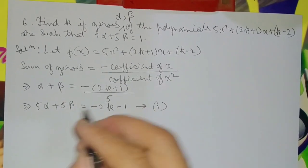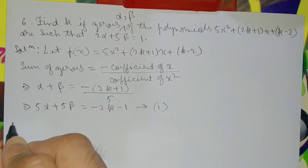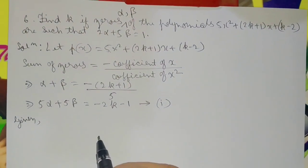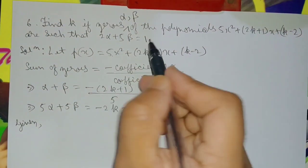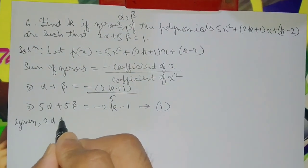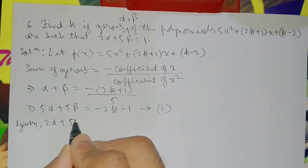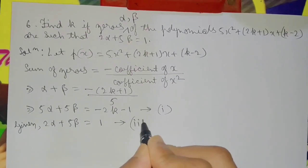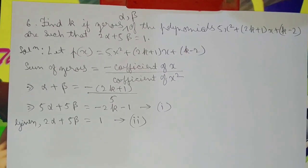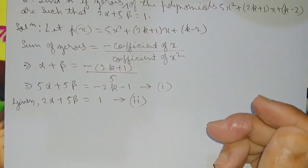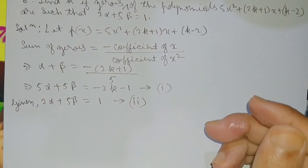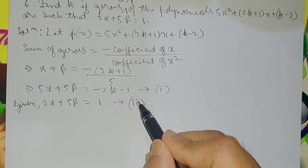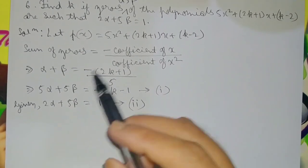Equation 1 equals minus 1. Now from the given condition, 2 alpha plus 5 beta is equal to 1. This is equation 2.